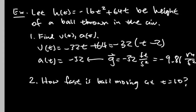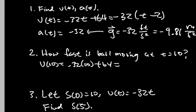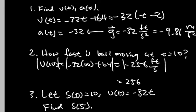So how fast is the ball moving at t equals 10? We use the velocity function: negative 32 times 10 plus 64 equals negative 256 feet per second. However, if the question asks for speed rather than velocity, you take the absolute value, giving 256 feet per second.